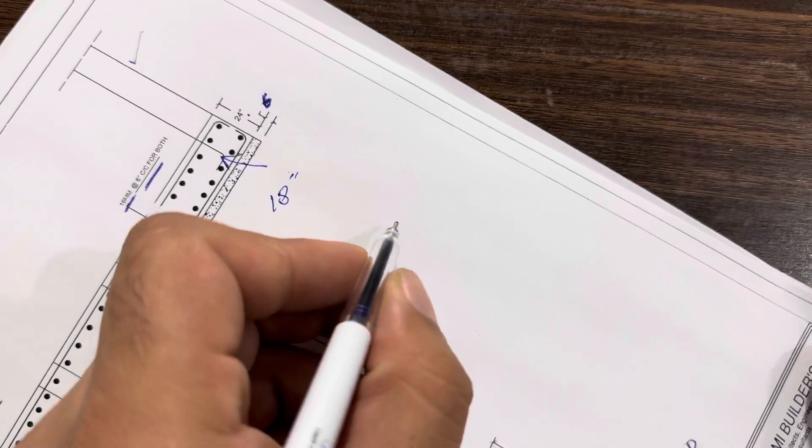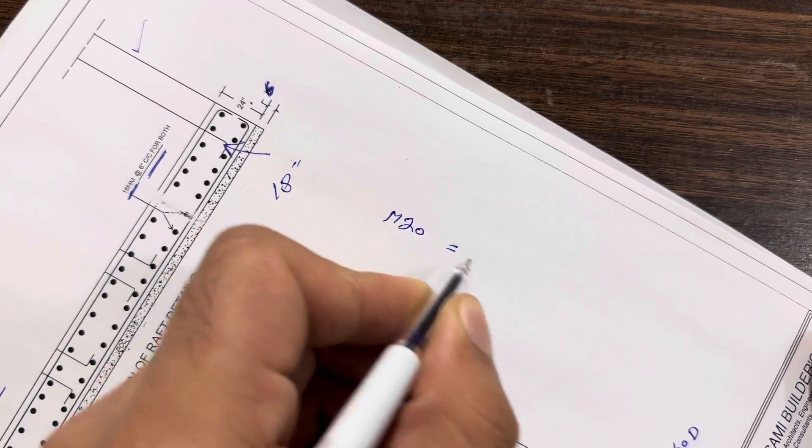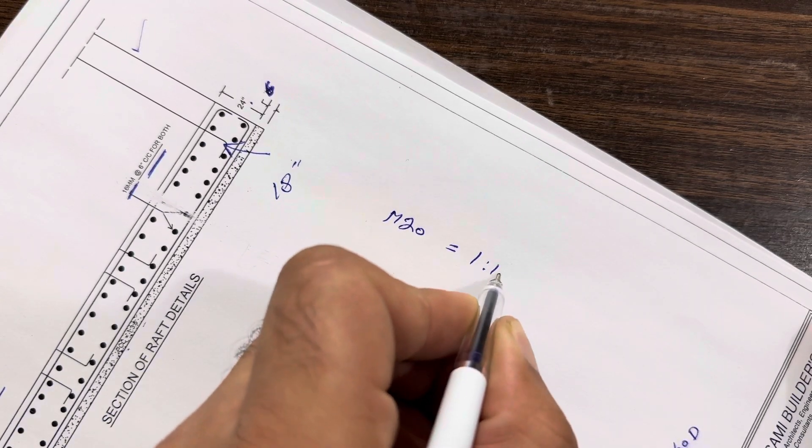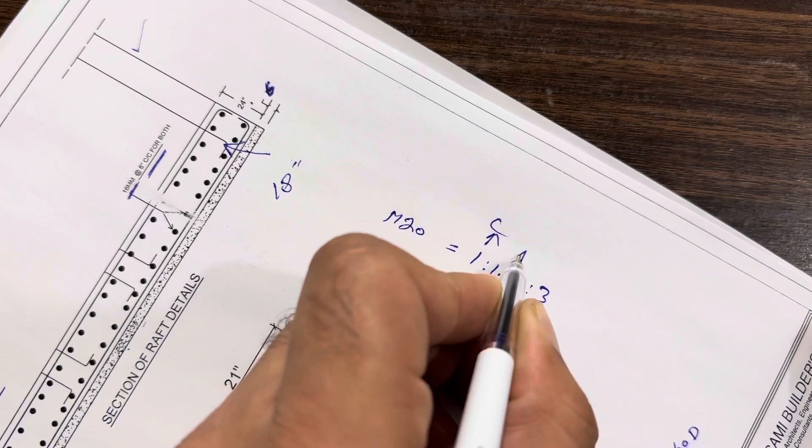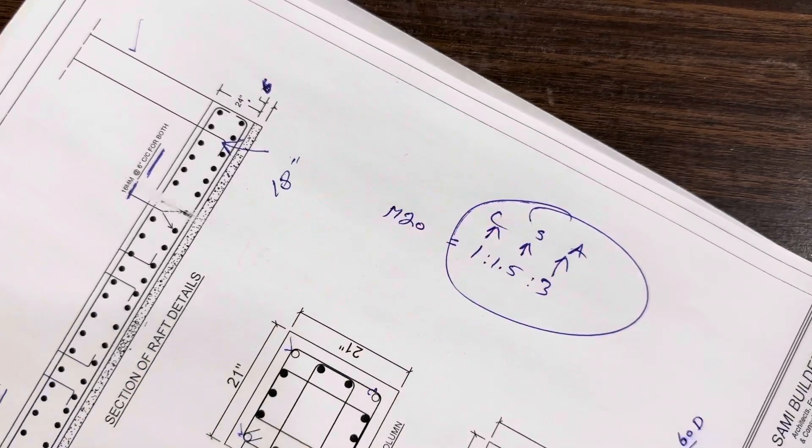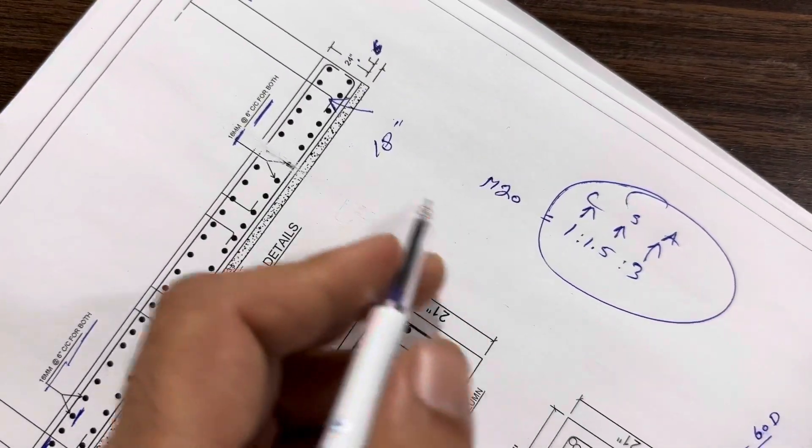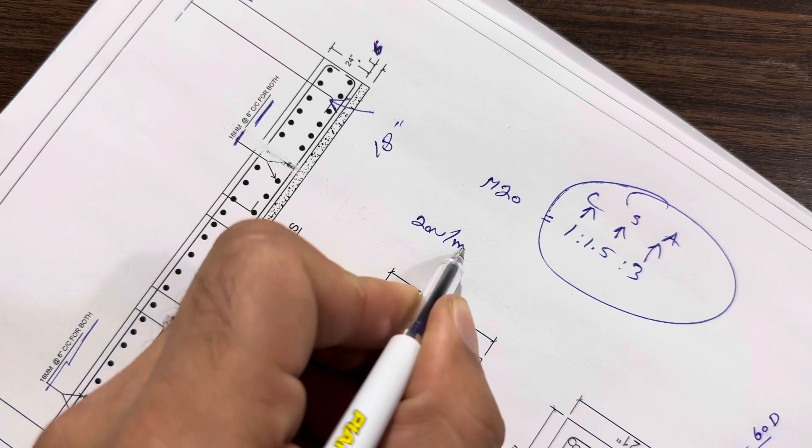We are using M20 grade concrete which ratio is 1 ratio 1.5 ratio 3, where one part is cement, 1.5 parts are sand, three parts are crushed or aggregate. This is grade of concrete which characteristic strength is 20 newton per mm square after 28 days.